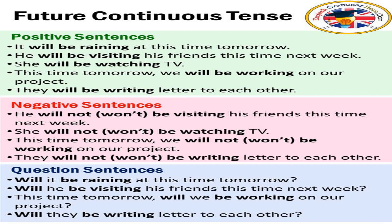Next: 'This time tomorrow, we will be working on a project.' Negative: 'This time tomorrow, we will not be working on a project.' Interrogative: 'This time tomorrow, will we be working on our project?' Note that when a sentence starts with 'this time tomorrow,' we keep it and write 'will' after it for questions. Last one: 'They will be writing letters to each other.' Negative: 'They will not be writing letters to each other.' Interrogative: 'Will they be writing letters to each other?'